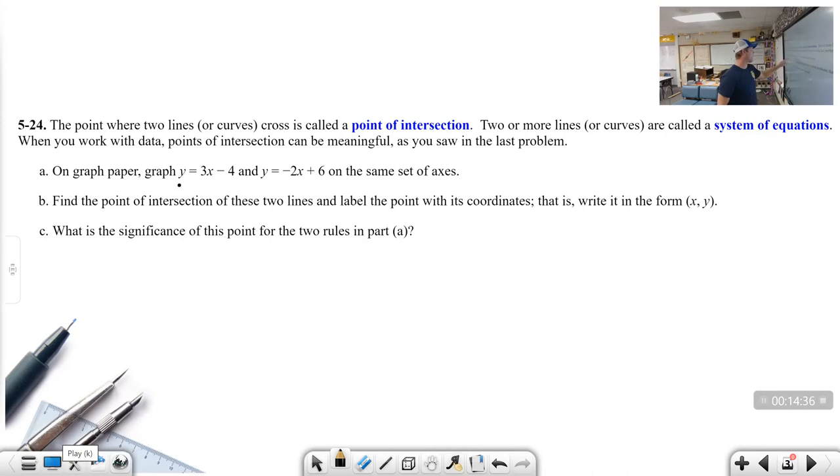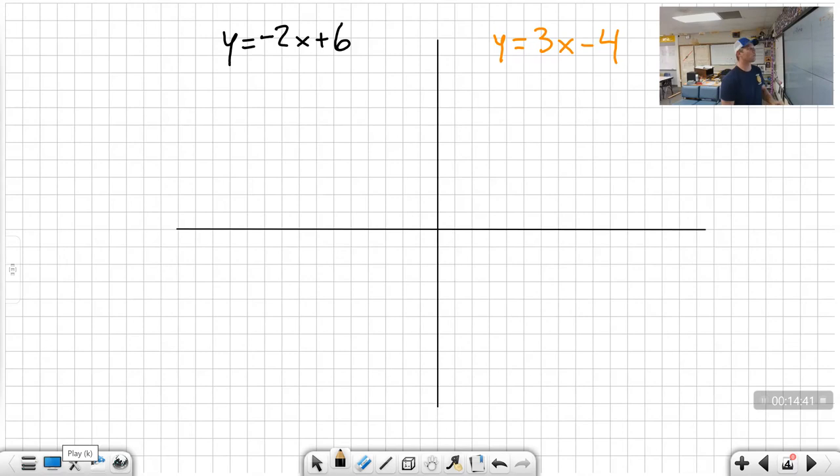When it comes down to it, what you are asked to do is a problem like 524. The point where two lines or curves cross is called the point of intersection. This is a really important word. Two or more lines are called a system of equations. That's the title of this chapter. When you work with data, points of intersection can be meaningful, as you saw in the last problem. We're going to practice graphing these two lines on the same set of axes. Write y equals negative 2x plus 6 on the left-hand side, and y equals 3x minus 4 on the right-hand side.